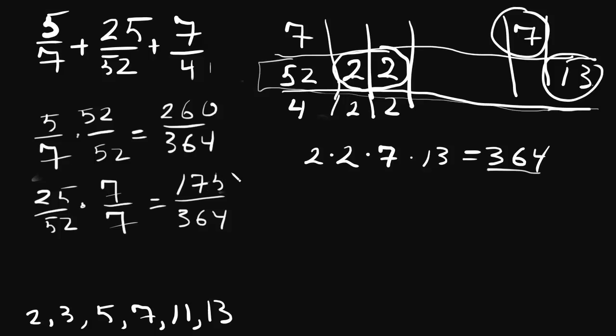Again, you're going to want to use your calculator to arrive at these results. Then finally, 7/4. We're going to multiply that by some sort of a fraction to turn that into something over 364. So we see here that 2 times 2, that's 4,